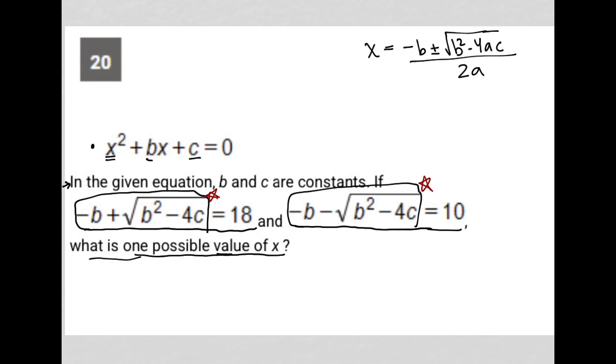The only thing we must recognize is that the equations provided do not have an A value, which means A must be 1. The coefficient is 1, so the A value is not necessary. I can write this as x = (-b ± √(b² - 4c)) / 2.